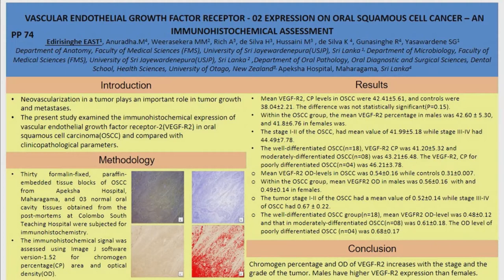We looked at the stage and grade of the tumour. There is an elevation as grade increases — higher grade corresponds to higher chromogen percentage and optical density. Conversely, lower stage and grade correspond to lower chromogen percentage and optical density. Our results tallied with other studies done internationally.